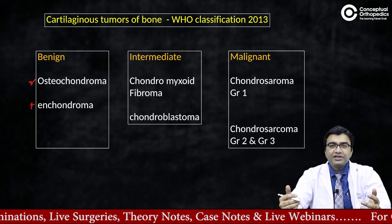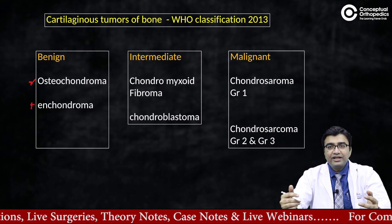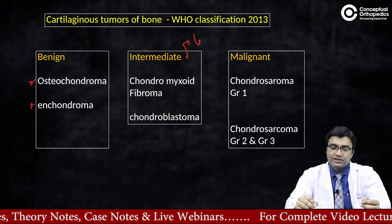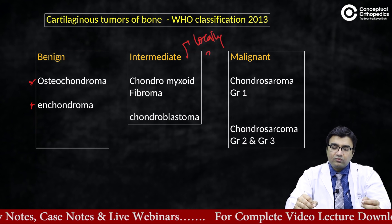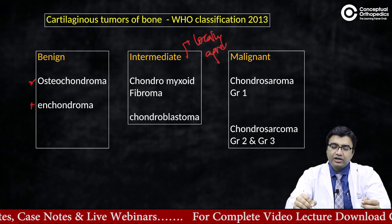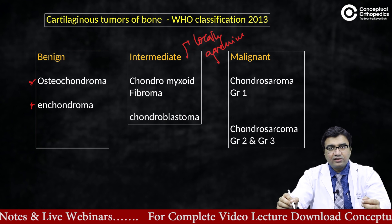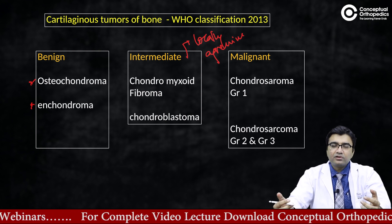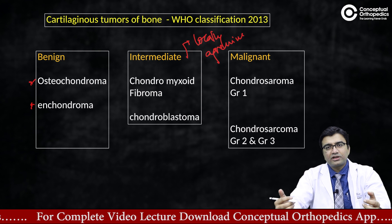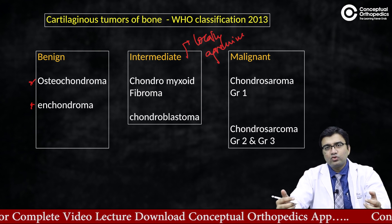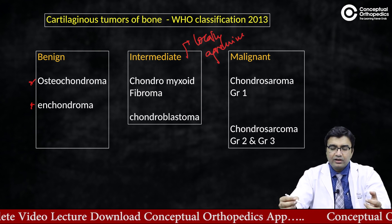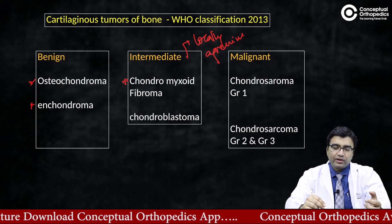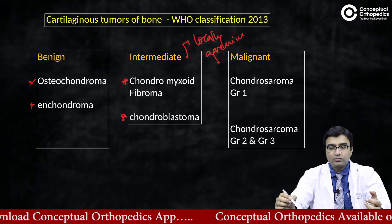The other common conditions are the intermediate grade tumors, which are locally aggressive ones requiring treatment because of their aggressive nature. They tend to destroy bone locally and can cause pathological fractures. Commonly what we see in this category are chondromyxoid fibromas and chondroblastoma.